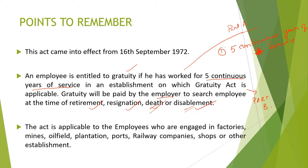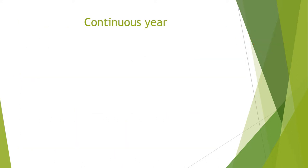This act is applicable to employees engaged in factories, mines, oil fields, plantations, ports, railway companies, shops, or other establishments. So if any person is employed or working in these types of establishments, the Payment of Gratuity Act 1972 is applicable to them.